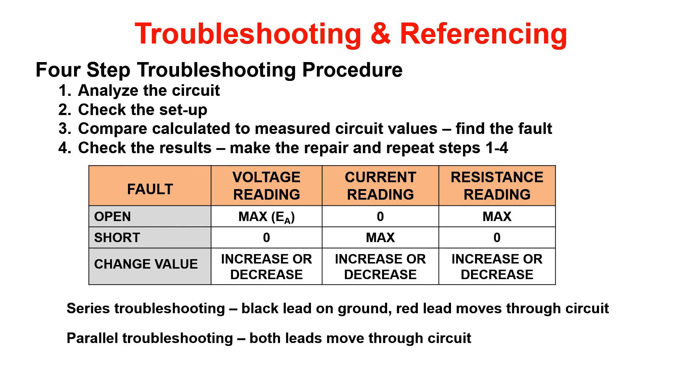Utilizing this chart, also located on page 75 in your student guide, is what you will see when you measure across a component. For an open component, or when a component has been removed from the circuit, you will read maximum or applied voltage, no current flow, and maximum resistance.